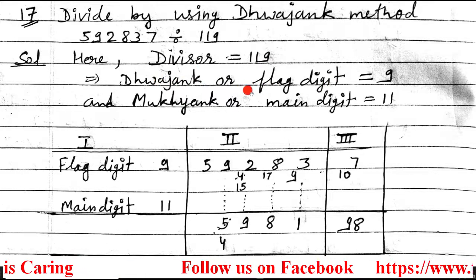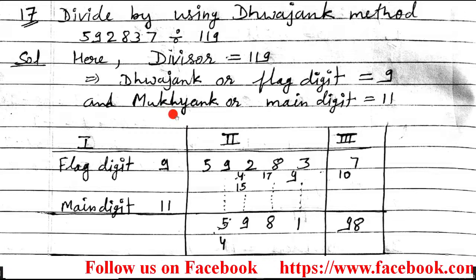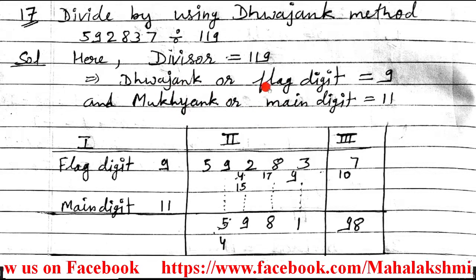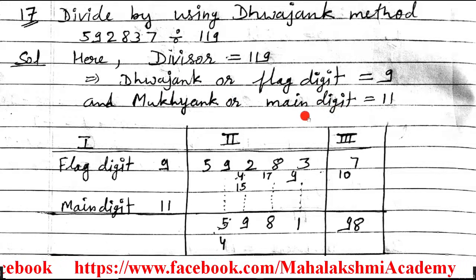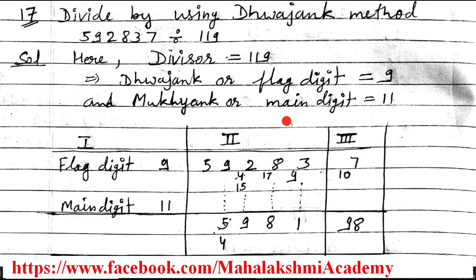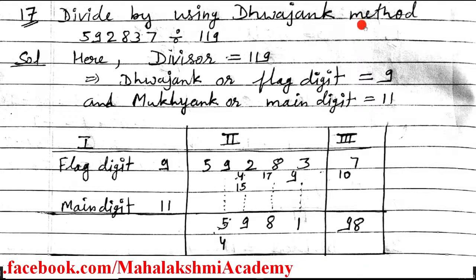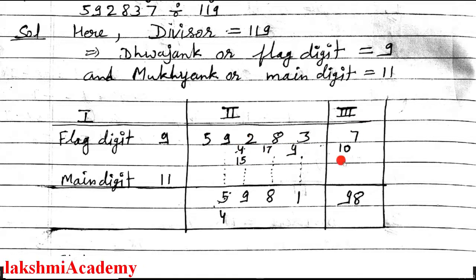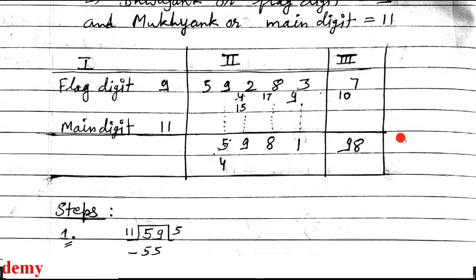Dwajang means flag. Mukhyang means main. These are Sanskrit words — their English versions are flag digit and main digit. Now we will start the division. In the Dwajang method, the steps are very important because without following the steps you cannot do this question.